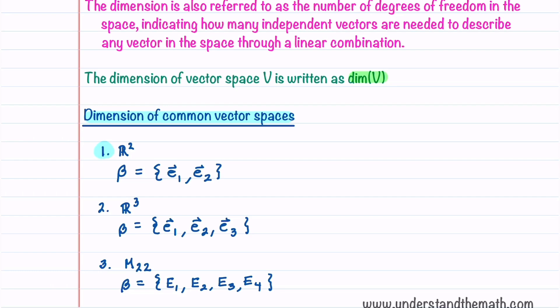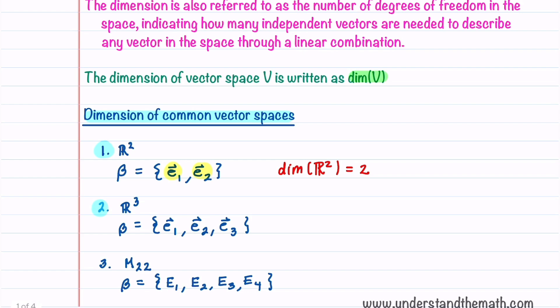The vector space R2 has basis vectors e1 and e2, so the dimension of R2 is equal to 2 — it's just the number of vectors in the basis. The vector space R3 has basis vectors e1, e2, and e3, so the dimension of R3 is equal to 3. Note that the dimension of Rn will just be n.